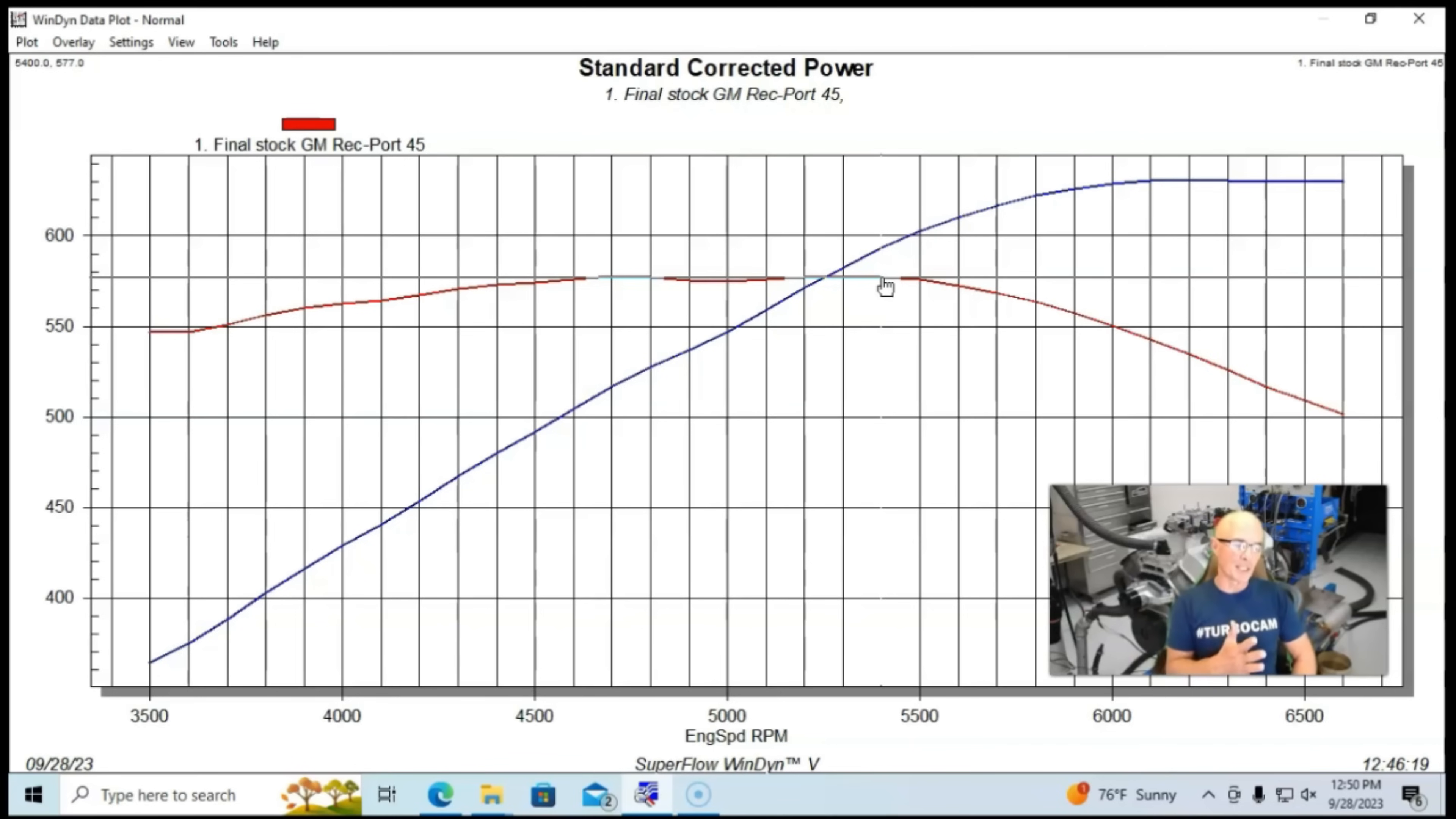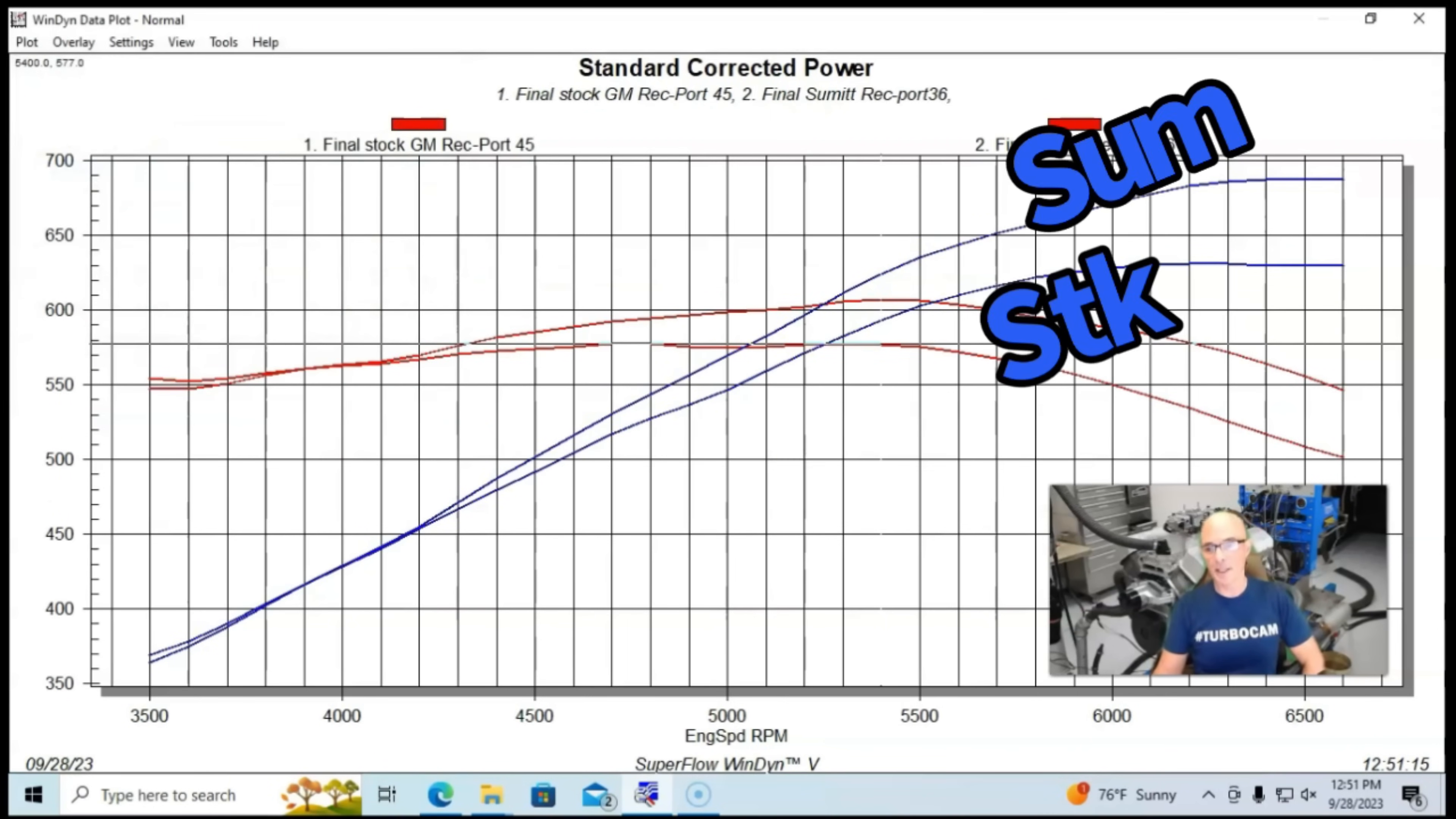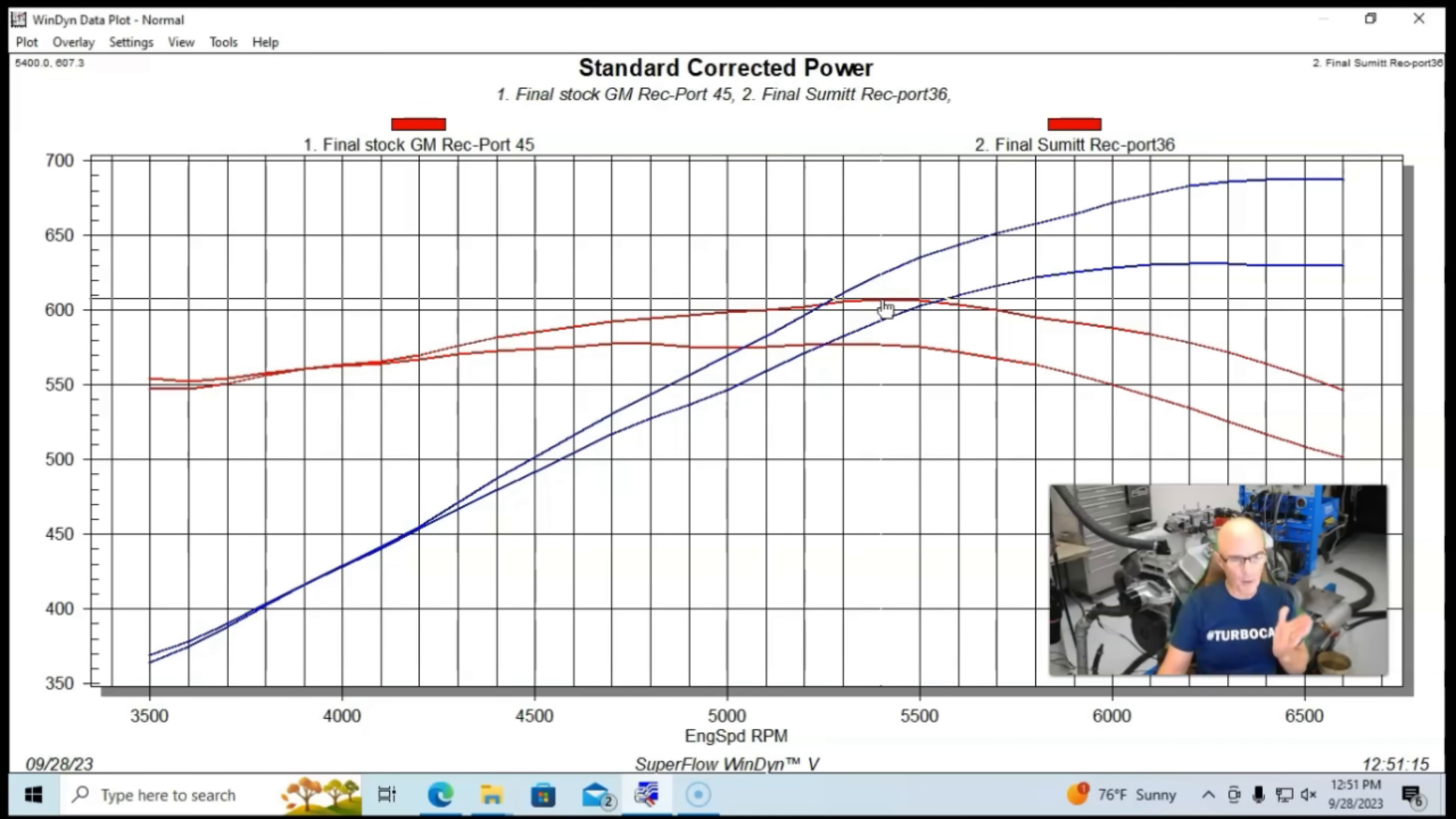What we did is step things up in cylinder head. The first thing we did was replace the factory iron heads with another iron head upgrade. In this case, these came from Summit. I'm assuming that these were a private label deal, either done by Dart or maybe World Products or something. Here is the Summit iron rec port heads, and you can see they worked very well. They picked up a lot of power. Peak power was up to 688 horsepower, and peak torque was up to 607 foot-pounds of torque.